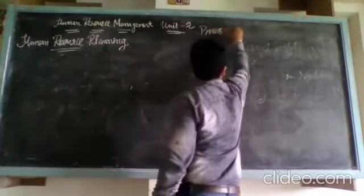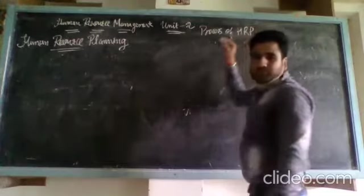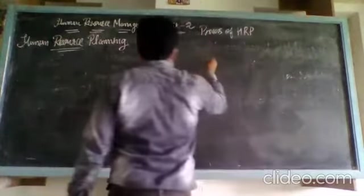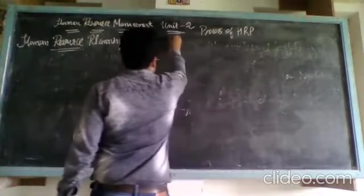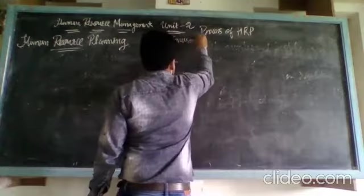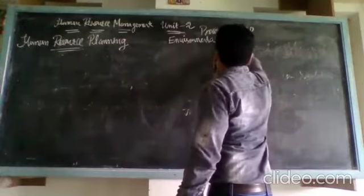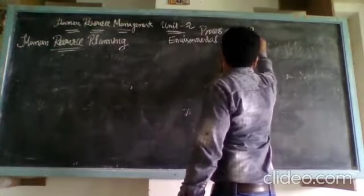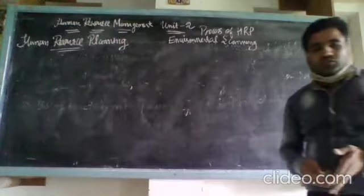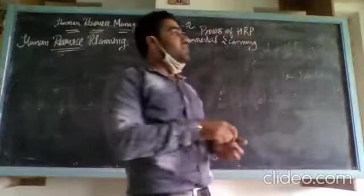Process of human resource planning. It starts with the first step that is known as environmental scanning. Environmental scanning is the first step in the process of human resource planning.